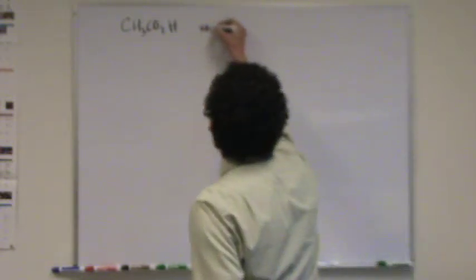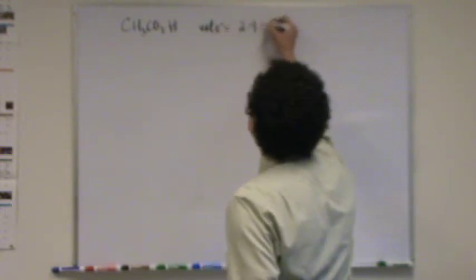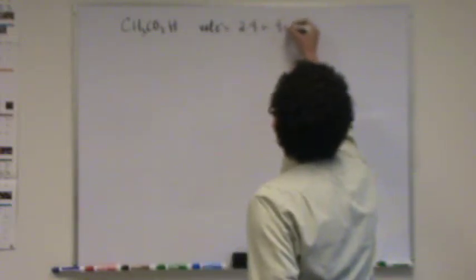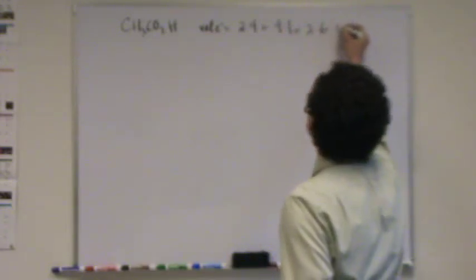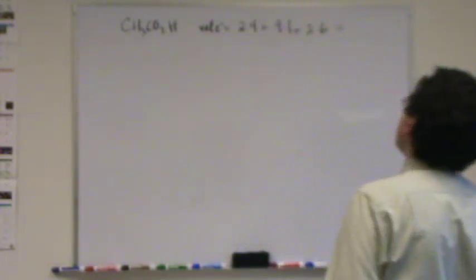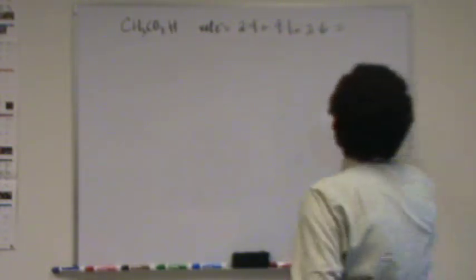Step one, valence electrons. So there's two carbons at four, there's four hydrogens at column one, and then there's two oxygens in column six. That's going to be twelve, and four is sixteen, plus eight. I guess it's twenty-four.